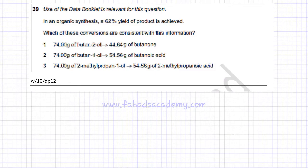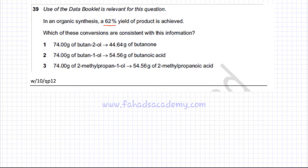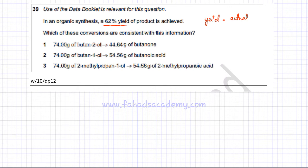The following question is about yield of reaction. In an organic synthesis, a 62% yield of product is achieved. The formula for yield is the actual (experimental) value divided by the theoretical value, multiplied by 100.